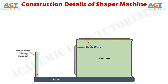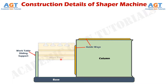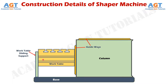On the side there is a support called the work table sliding support, which supports the table during upward and downward sliding movement. In between this sliding support and the guideways, there is the work table. The work table generally has a box-shaped structure, and on its top surface there are T-slots. These T-slots allow any type of machine vice to be easily set and sit firmly on the table. There is also a hand traversing wheel, also called an elevating hand wheel, used to move the work table upward or downward.